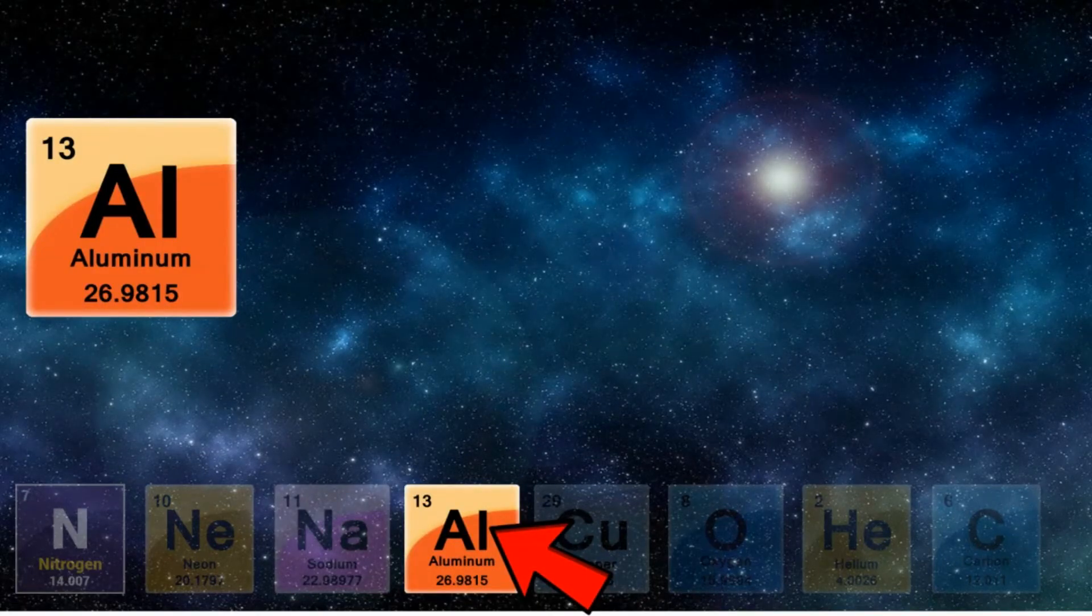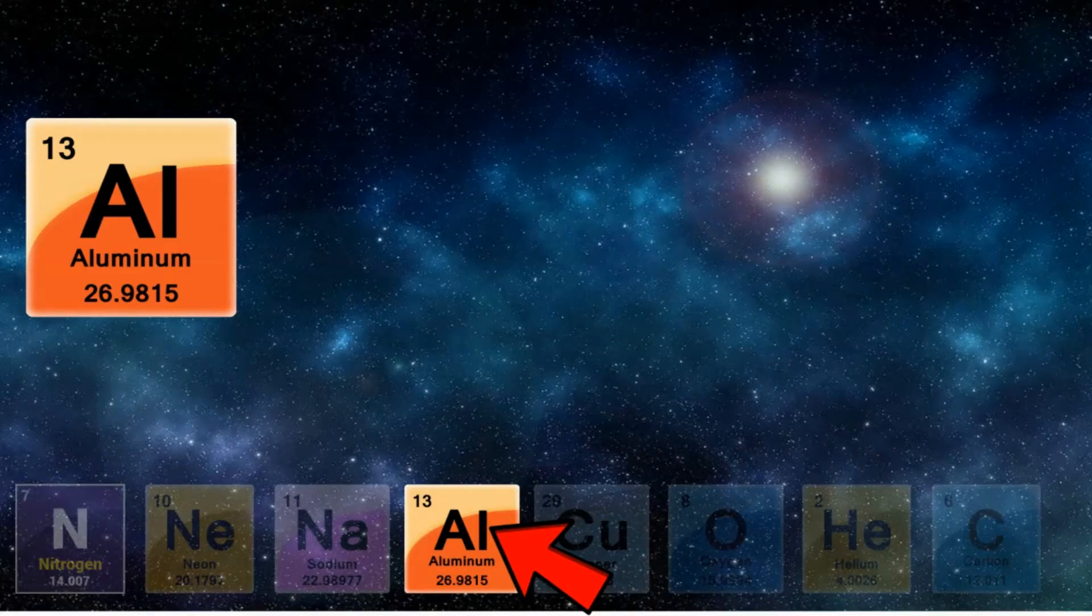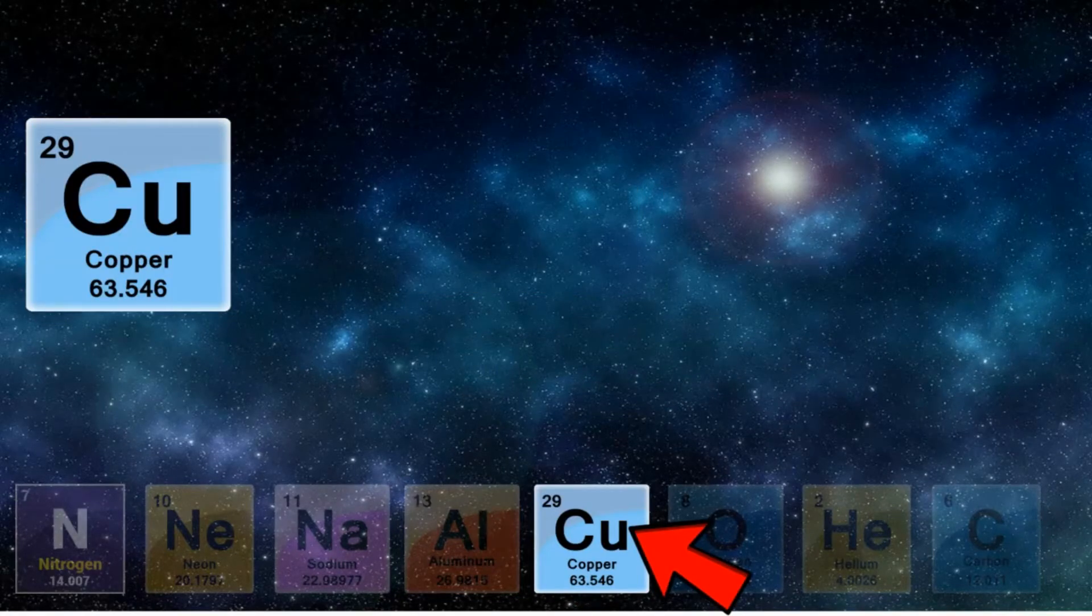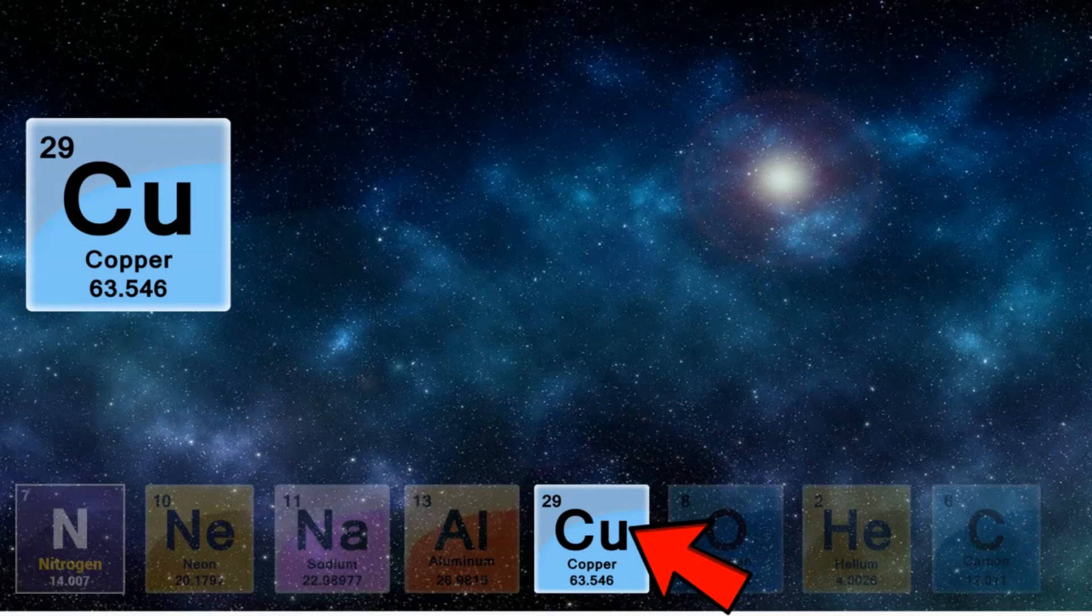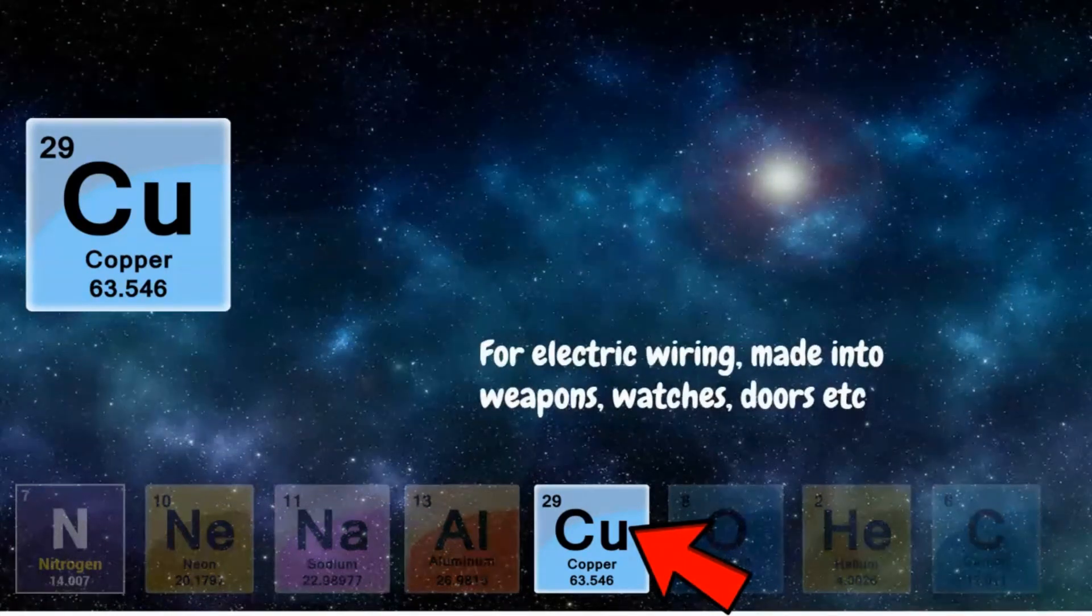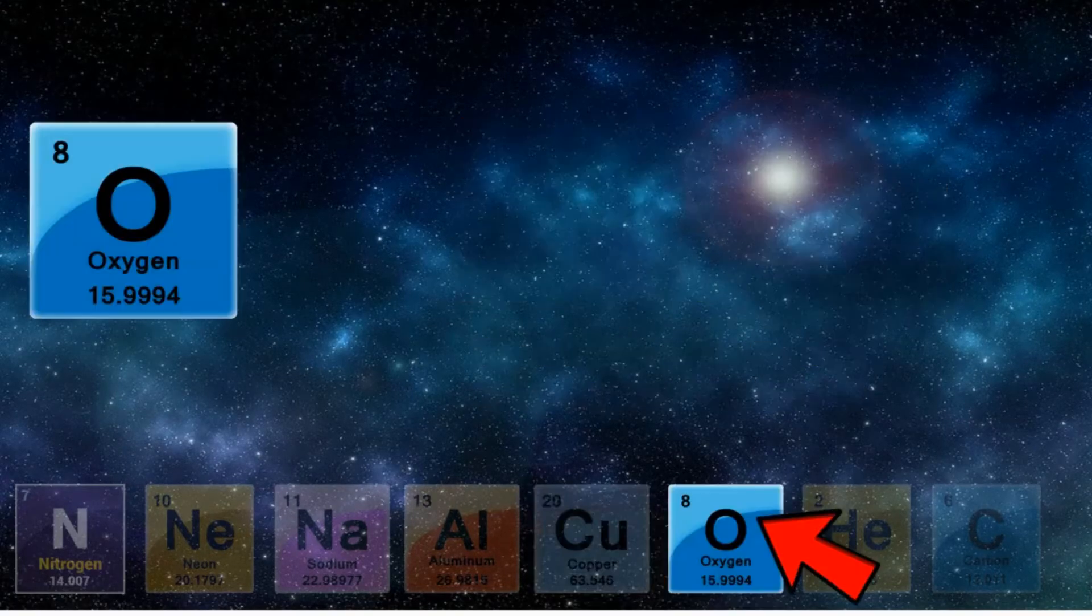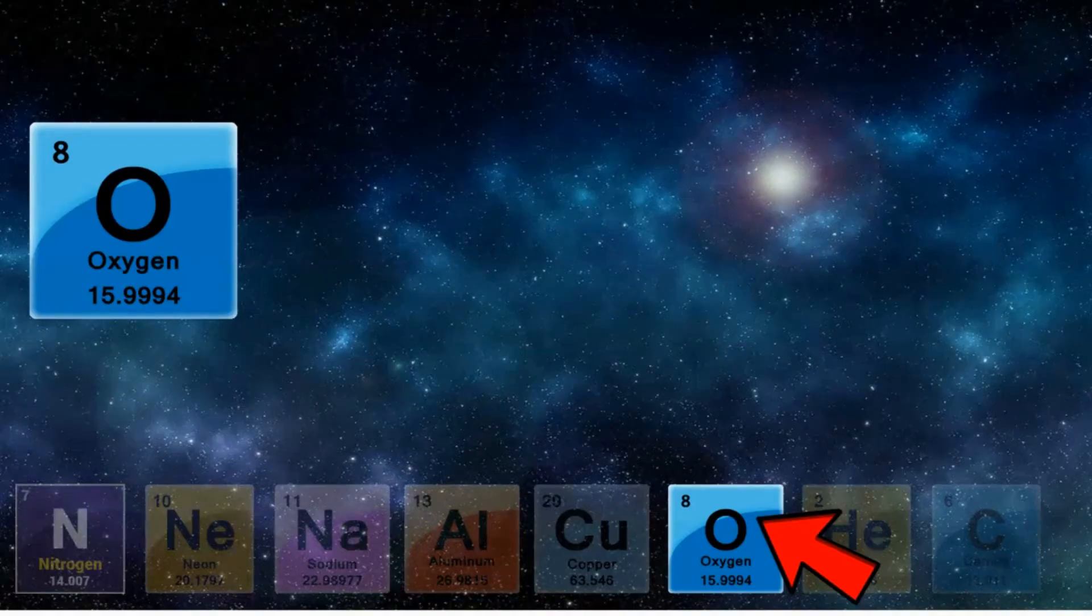Aluminum with a chemical symbol of Al. This is essential in the production of kitchenware, aluminum foil, and cans. Copper with a chemical symbol of Cu. It is used for conducting electricity and heat. It is also used in making accessories.